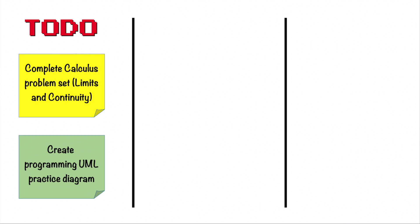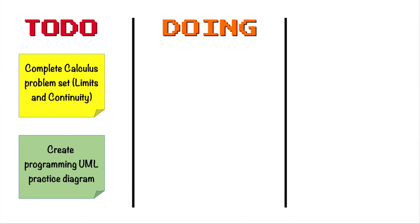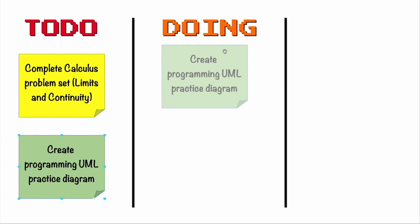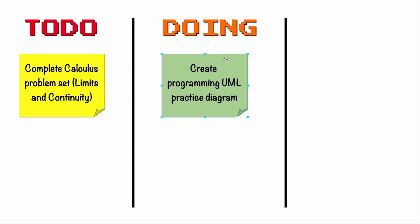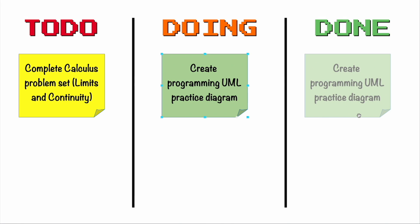Each sticky note below the heading column is a task related to that project or course. I wanted to create something like this on Discord, but with a more traditional and simple Kanban board. In this Kanban board, three columns make up the board: a to-do column for tasks that need to be done, a doing column for tasks currently being worked on, and a done column for completed tasks.